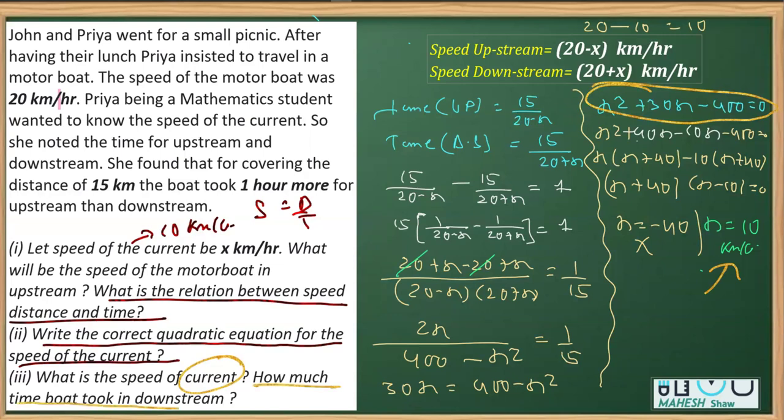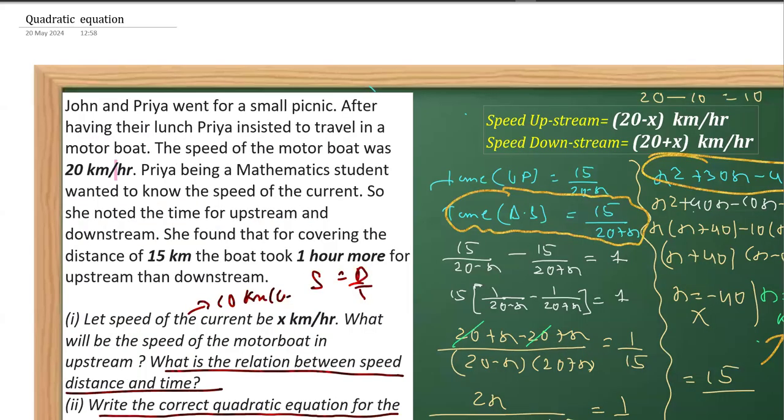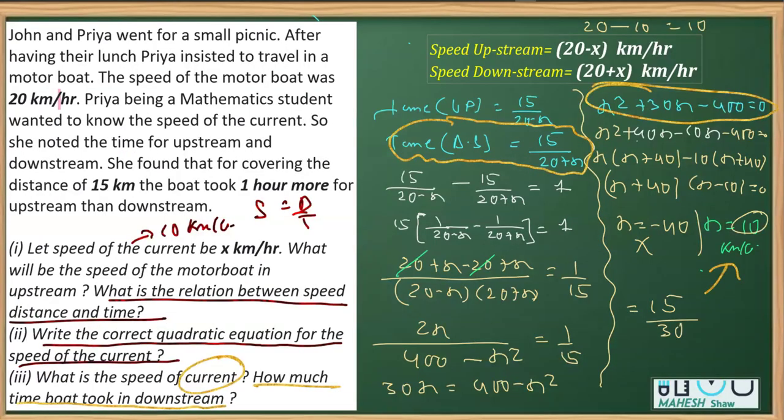What is the speed of the current and we obtain the speed of the current as 10 km per hour and how much time the boat took in downstream. Time in downstream is 15 over 20 plus x and x is how much? 10. So 20 plus 10 is 30. So that is 1 by 2. That is half hour or you can say 30 minutes. So we will say this is the time taken for the downstream.